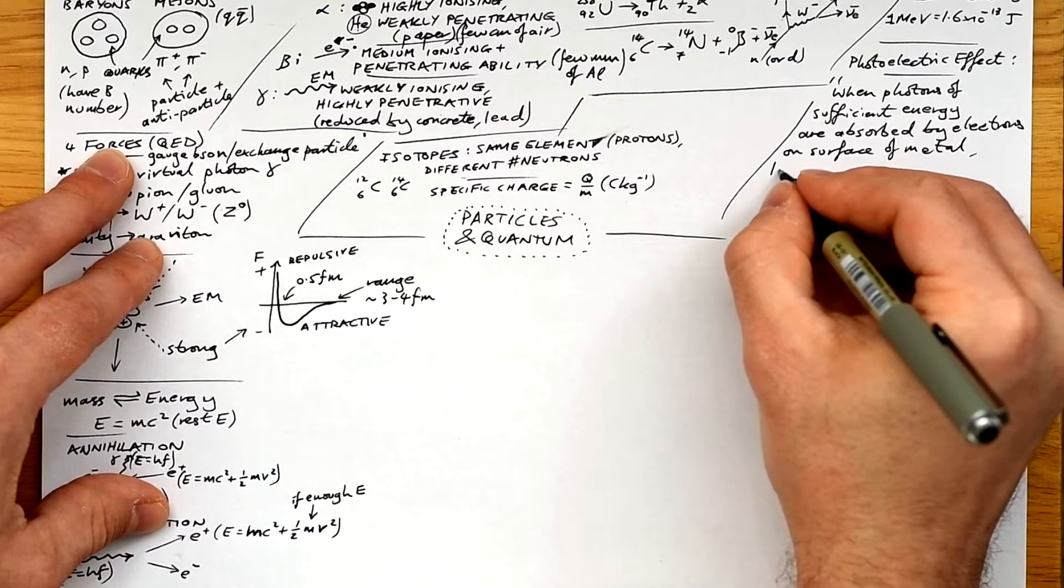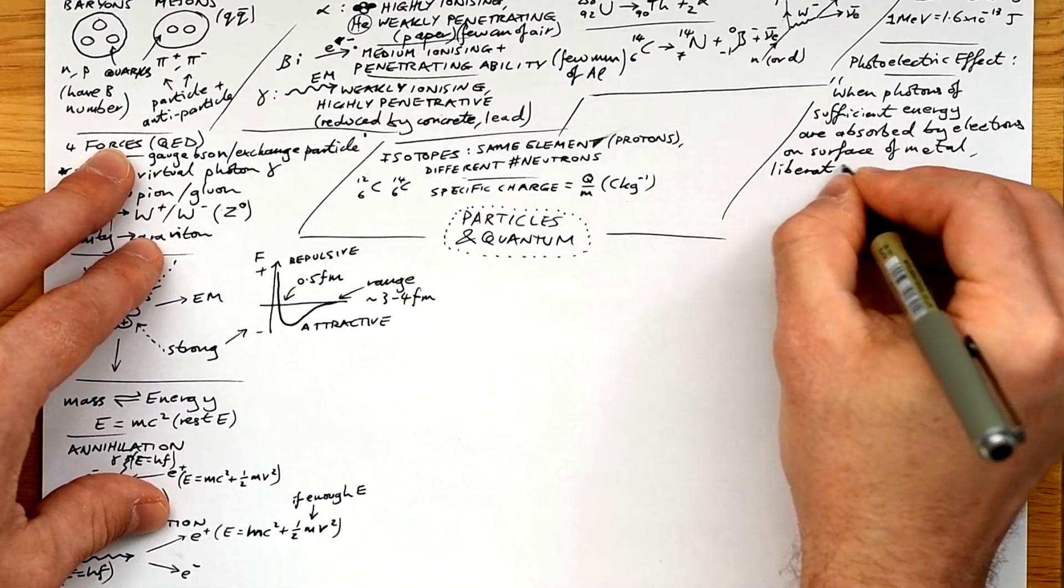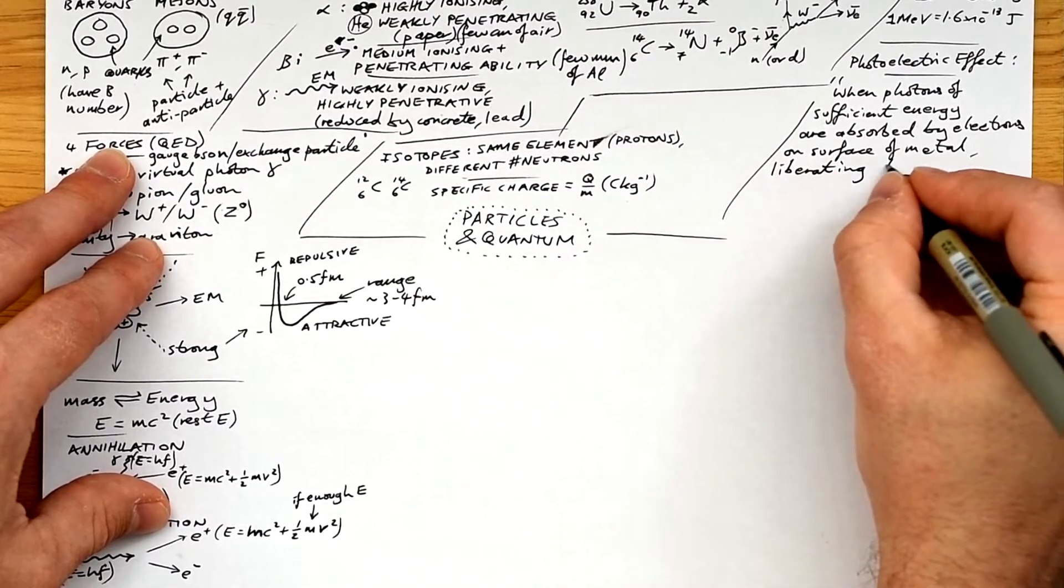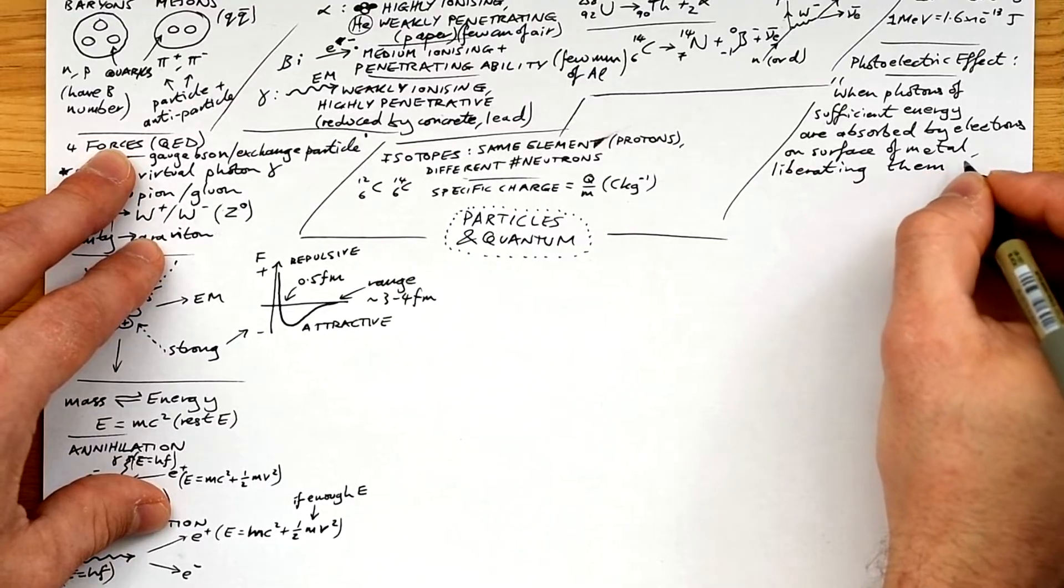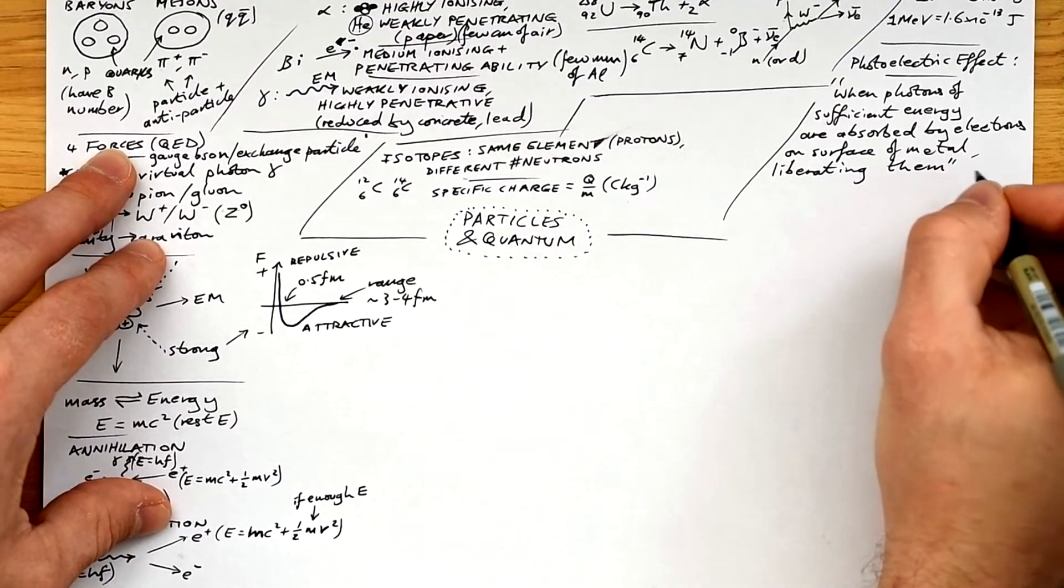Okay, so let's go on to some quantum then. What is the photoelectric effect? It's when photons of sufficient energy are absorbed by electrons on the surface of a metal, therefore liberating them. They escape.